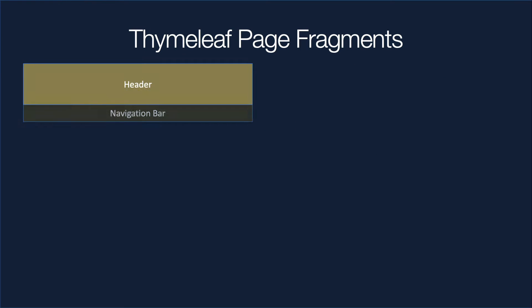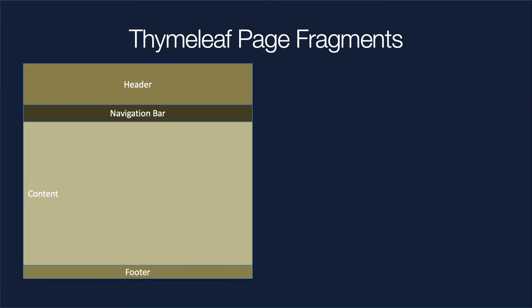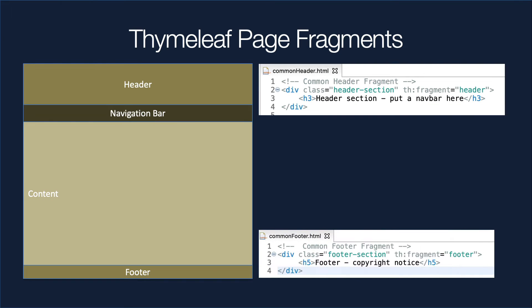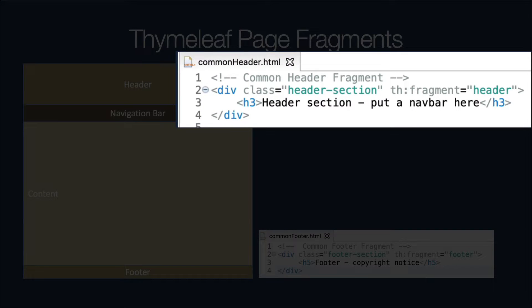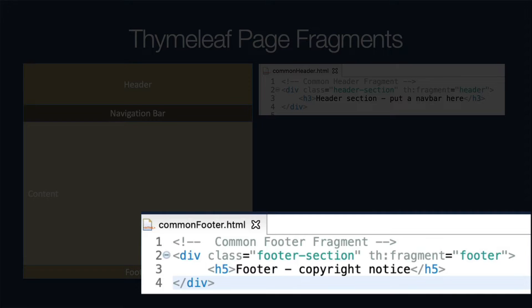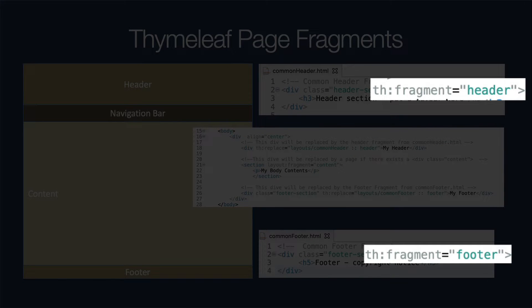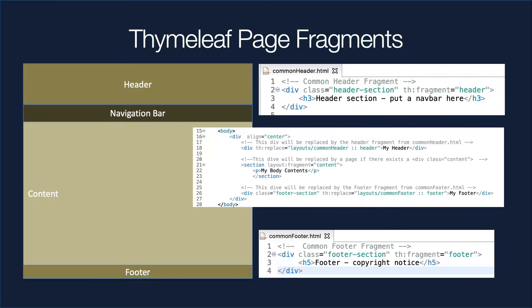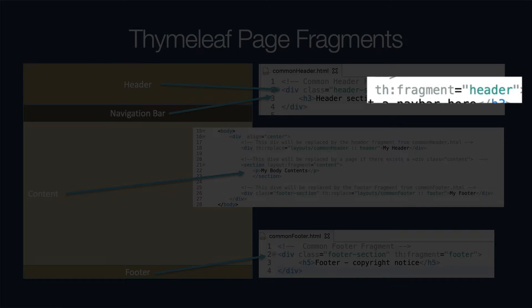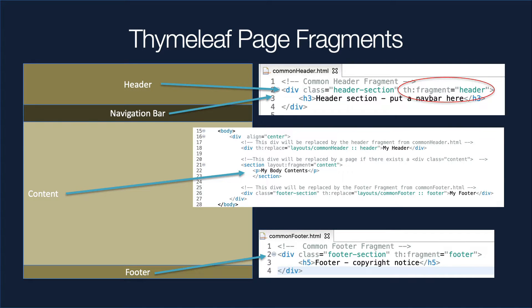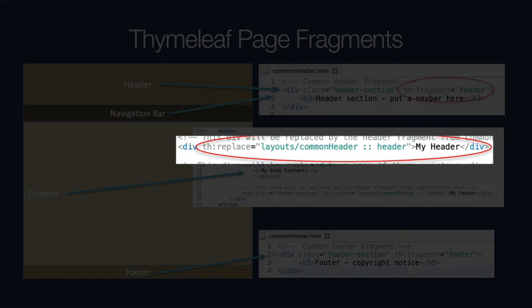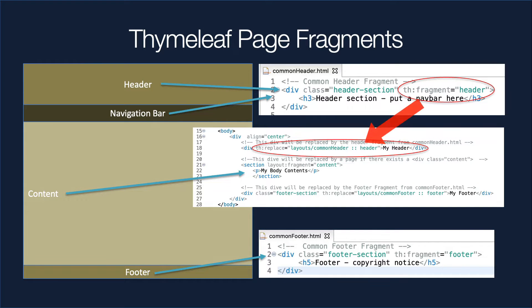Here's what we're going to work on today. We're going to take this simple framework and then put in some Thymeleaf tags. We're going to create a separate file for the header, a separate file for the footer, and name these things with a fragment name. We're also going to have a main layout — the default layout — which is going to stitch these together. The header has a section that says 'th:fragment header', and the main default layout has a replacement command to dynamically substitute one piece in for another. That's what this tutorial is about: how to configure the application and set up your files so that your project is more modular.